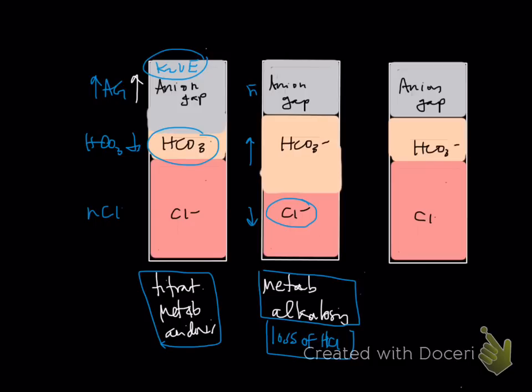And lastly, the one that I think is the most confusing is something called a loss metabolic acidosis, also called a secretional metabolic acidosis. When we talk about sodium versus chloride, this is what we talk about. In this case, you're actually losing bicarbonate.